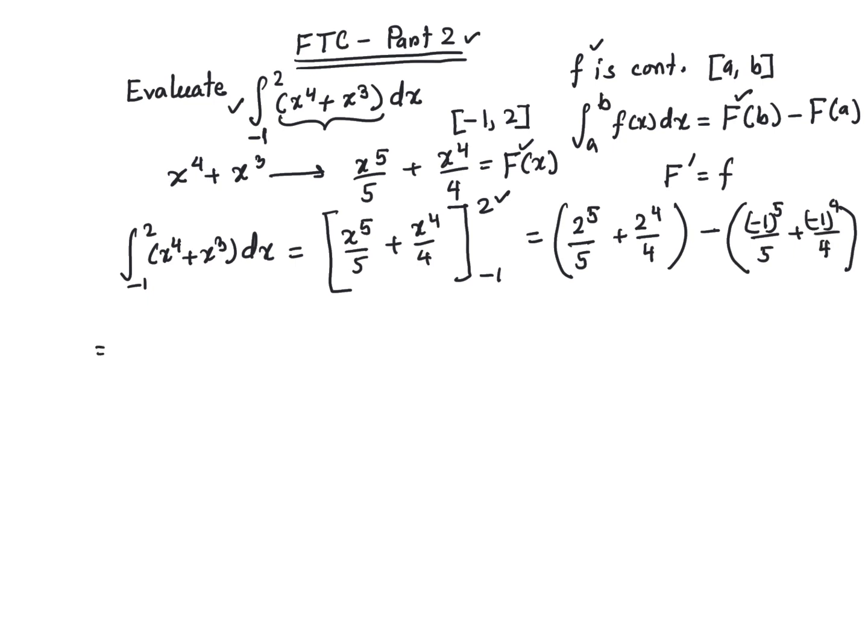So, 2^5 is 32/5 plus 2^4 is 16/4, which is 4, minus